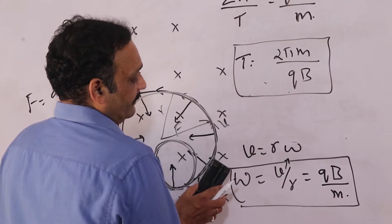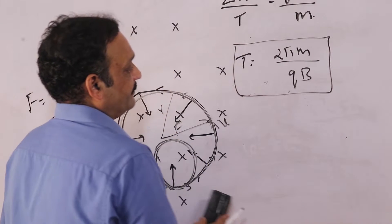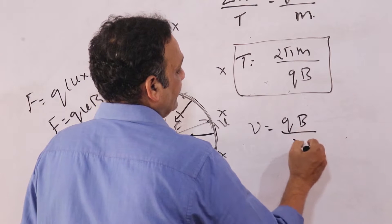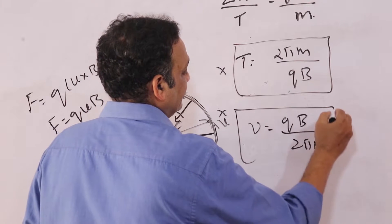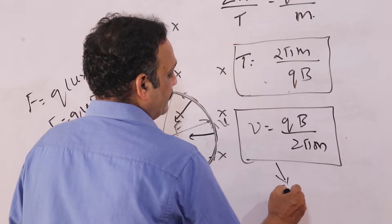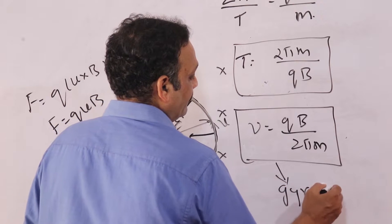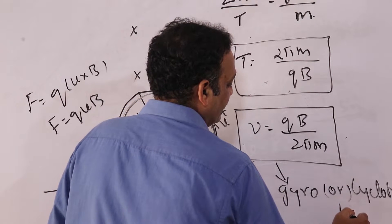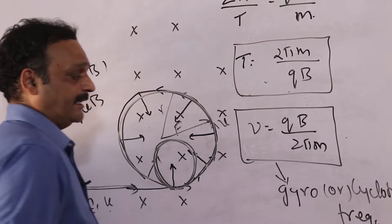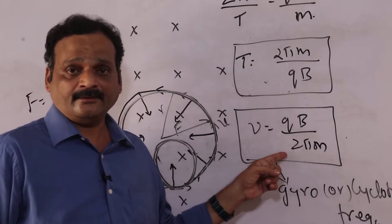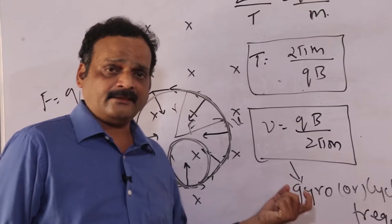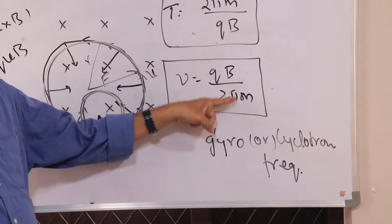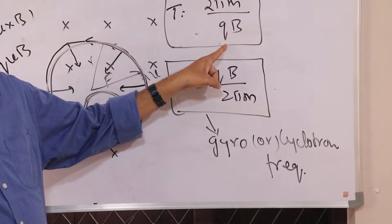The reciprocal of the time period is frequency. So frequency ν = qB/2πm. This is called the gyro frequency — 'gyro' means rotation — or cyclotron frequency, because in the particle accelerator called the cyclotron, particles move with this frequency. The time period is T = 2πm/qB and frequency is ν = qB/2πm.